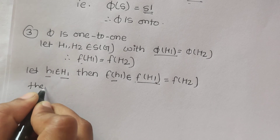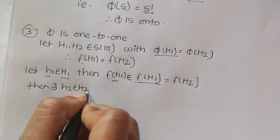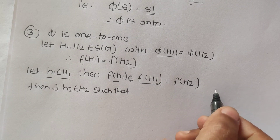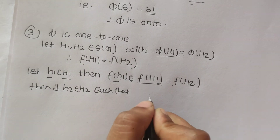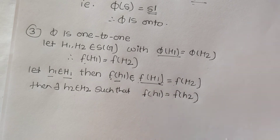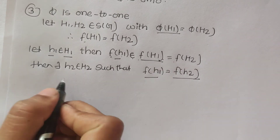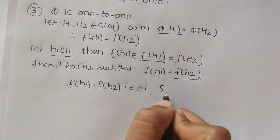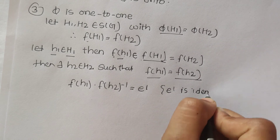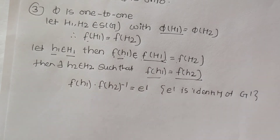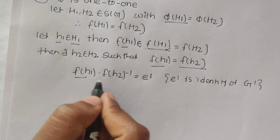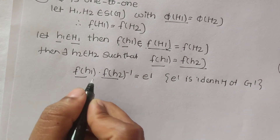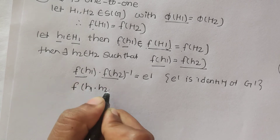Then there exists h2 belonging to H2, and h2 belongs to f(S2), and f(S2) = f(S1). That means f(S1) = f(S2). Now, f(S1) · f(S2)⁻¹ = e', where e' is the identity of G'. Because f(S1) and f(S2) are elements of G', by homomorphism, S2⁻¹ equals e'.